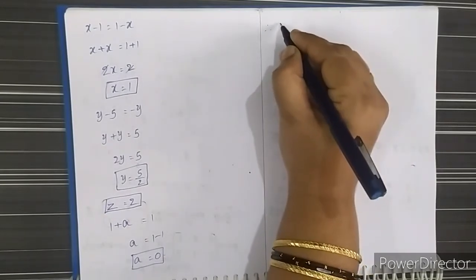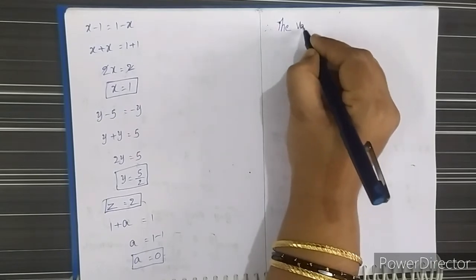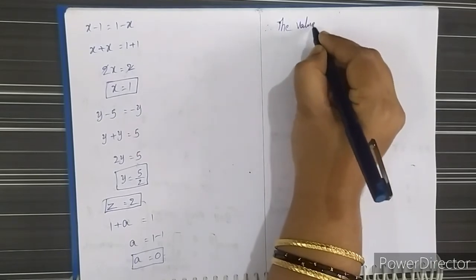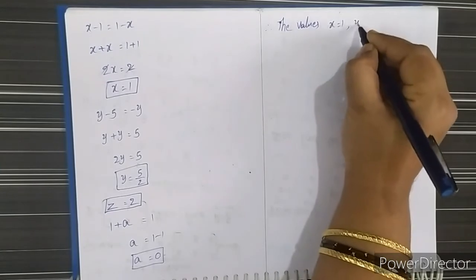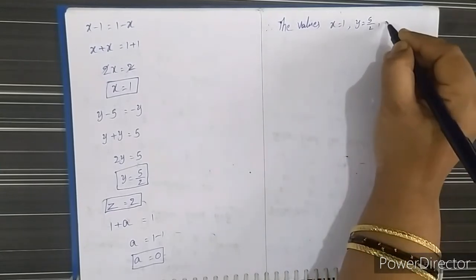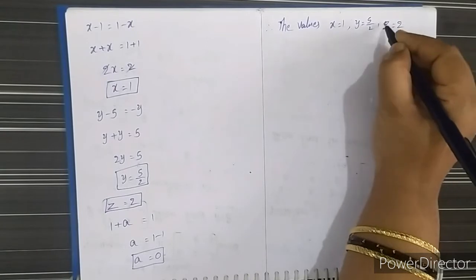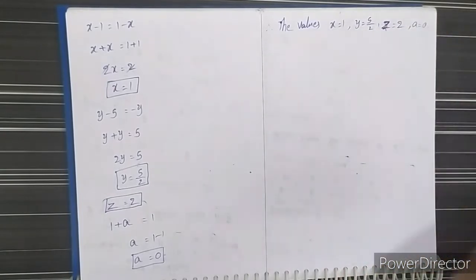Therefore the values are: x equals 1, y equals 5/2, z equals 2, and a equals 0. This is our second problem solution.